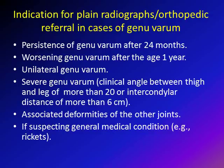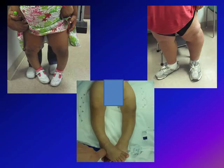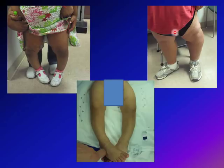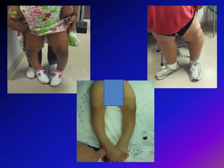Here are some clinical pictures of patients presenting with Genu Varum. This is a three-year-old obese girl presenting with Genu Varum. This is a picture of Blount disease — a separate lecture will cover Blount disease. This is a 12-year-old obese boy presenting with unilateral Genu Varum on his left side, which is adolescent Blount disease. This is a three-year-old girl with dysplasia presenting with bilateral Genu Varum. All these patients have Genu Varum due to different etiologies.